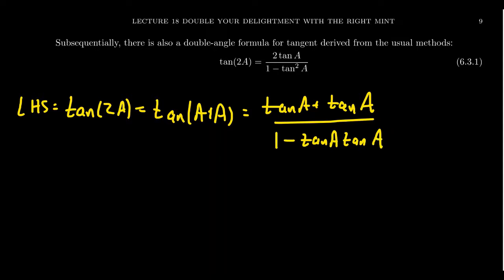In the more general setting, the denominator looks like 1 minus tangent a tangent b. And this then simplifies to be 2 tangent of a over 1 minus tangent squared of a, which is the right hand side.